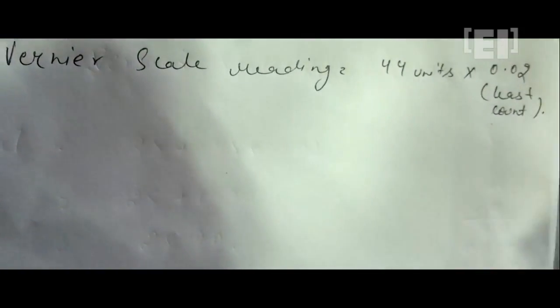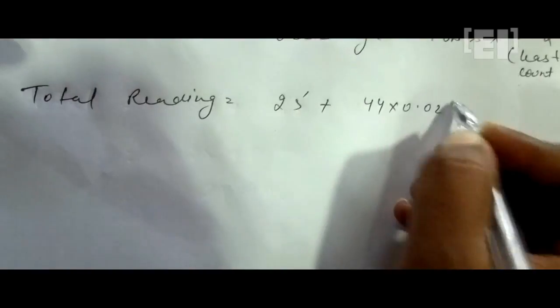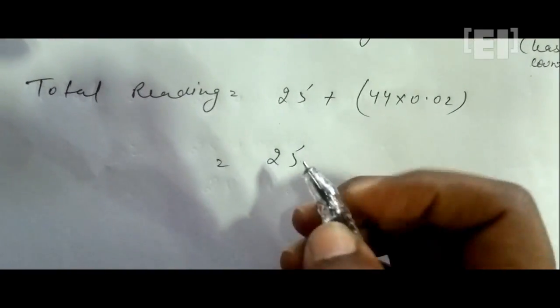Multiplying it with the least count of the vernier scale and adding the reading of the main scale will give you the thickness of the object. That is 25.88 mm in this case.